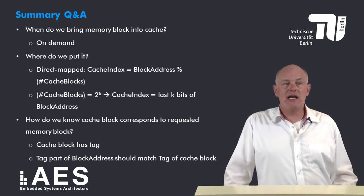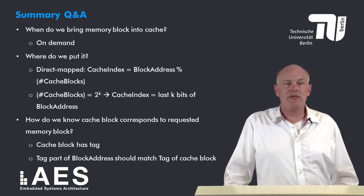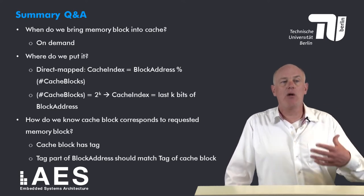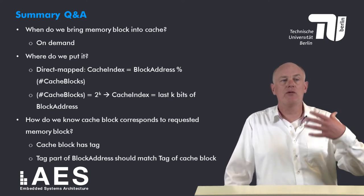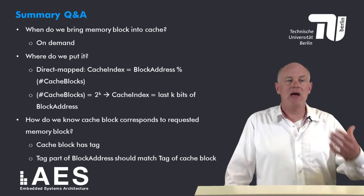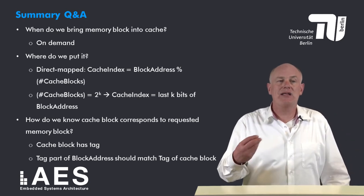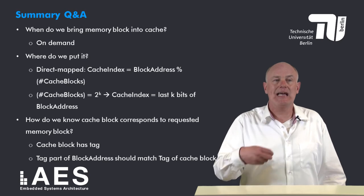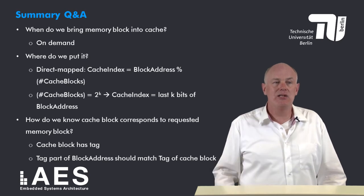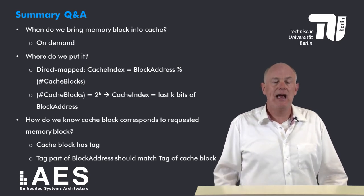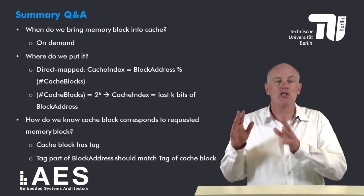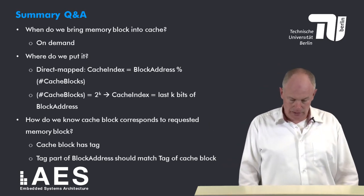The final high-level question for caches was: how do we know the cache block corresponds to the requested memory block? We answered that because every cache block has a tag in addition to the data, and the tag part of the block address should correspond to the tag of the cache block.